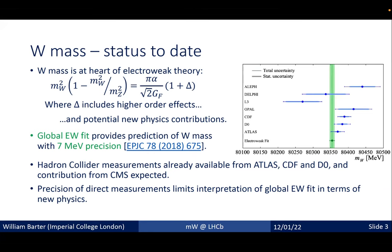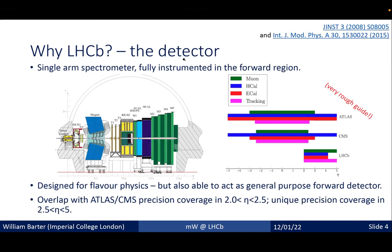The global electroweak fit gives a prediction for the W mass with 7 MeV precision. Hadron collider measurements already exist from ATLAS, CDF, and D0 — the best achieving 19 MeV precision, with direct measurements averaging around 12–13 MeV. There is a gap between indirect and direct measurement precision, and new physics could be hiding in this gap. Improved direct measurements of the W mass are crucial because they directly limit the interpretation of the global electroweak fit in terms of new physics.